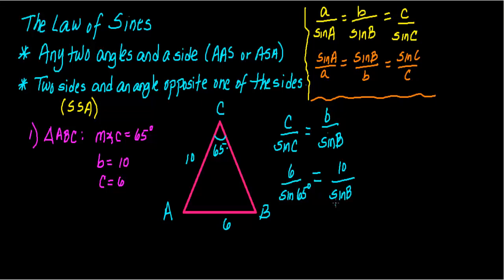So now we have to solve for sine of B because we're interested in this angle. So this is what I do. I'm going to cross multiply here and cross multiply that way. On this side, I'll end up with 6 sine of angle B equal to 10 sine of 65 degrees. To isolate sine of B, I divide by 6 on both sides.